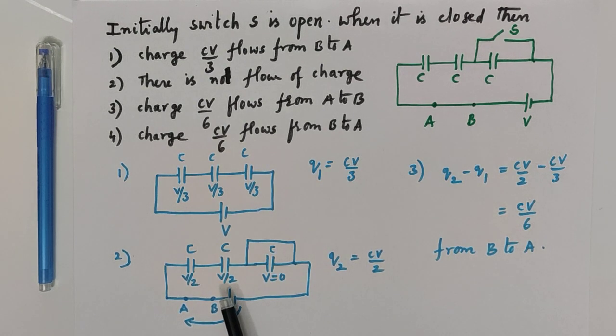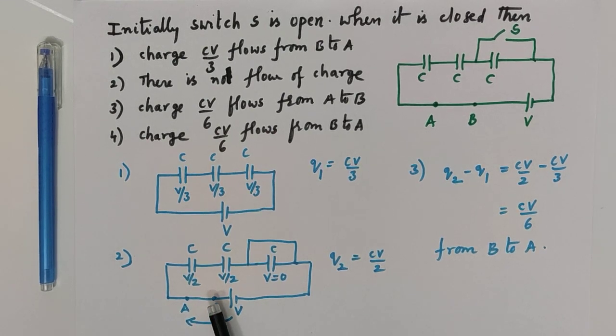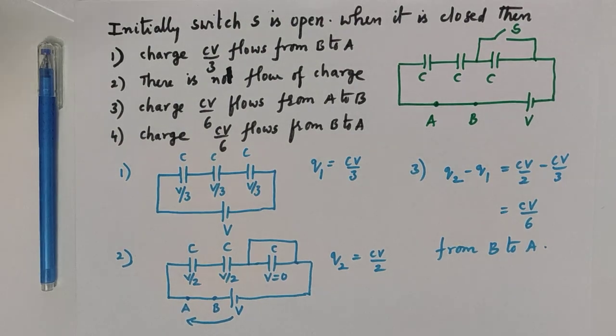The positive terminal of the battery supplies positive charge from the positive terminal to the capacitors through B and A. So the positive charge flows from B to A. Thank you.